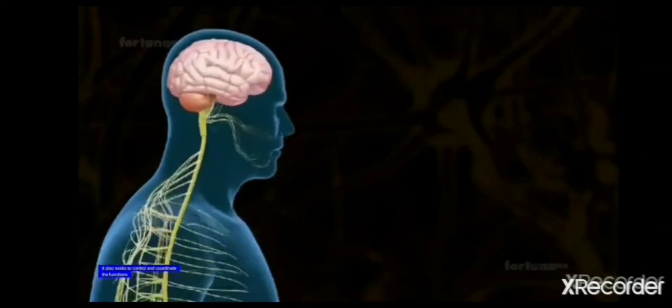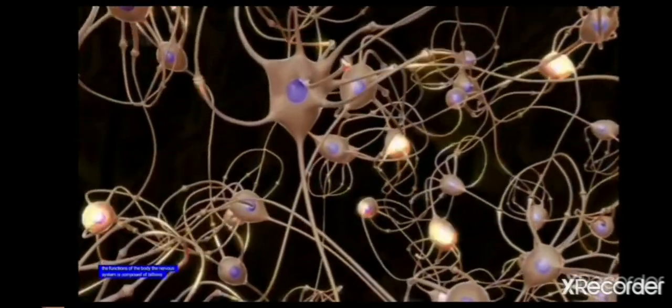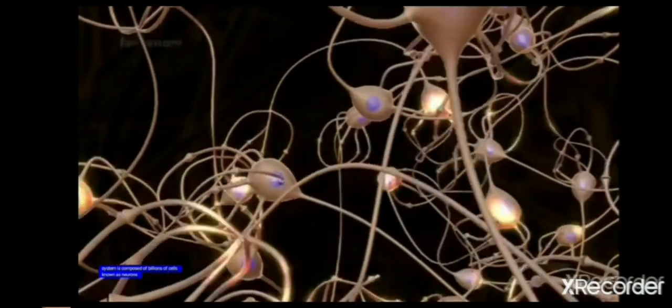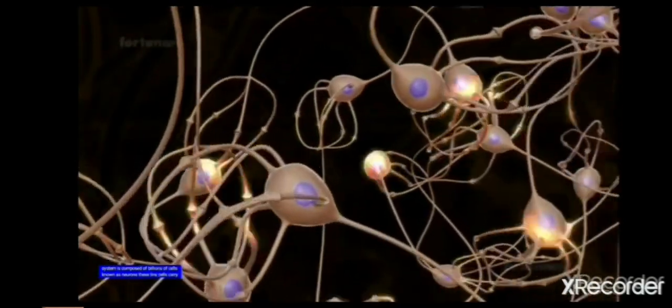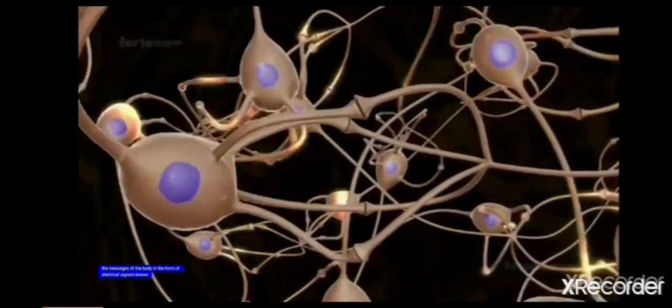Coordination system consists of brain, spinal cord and nerves arising from brain and spinal cord. Neurons are the structural and functional units of nervous systems. They carry information in the form of electric signals called nerve impulses in our brain and spinal cord.